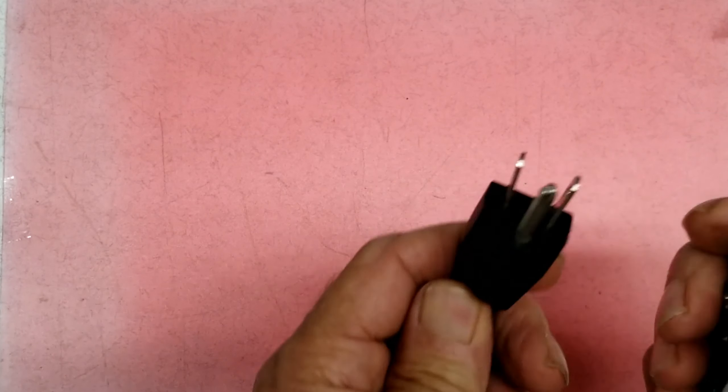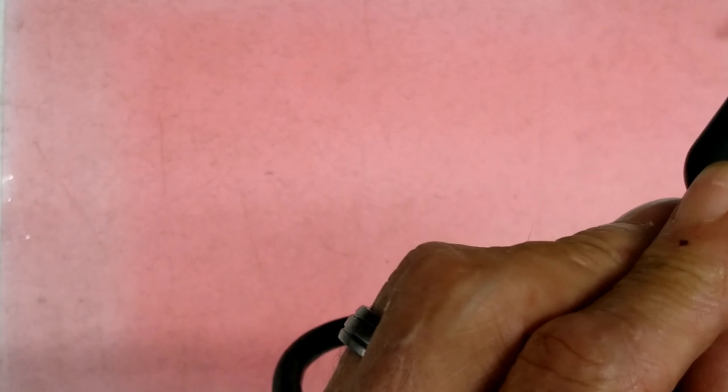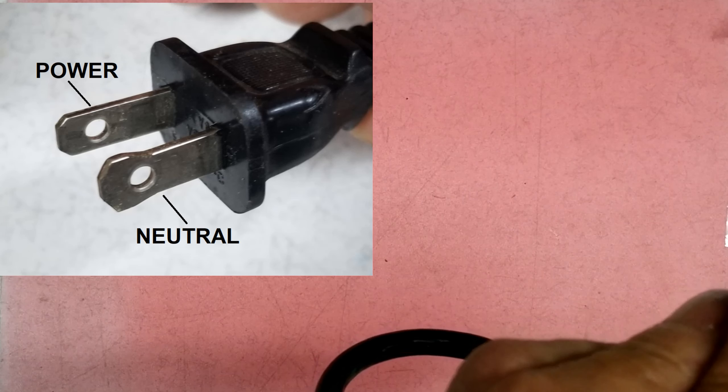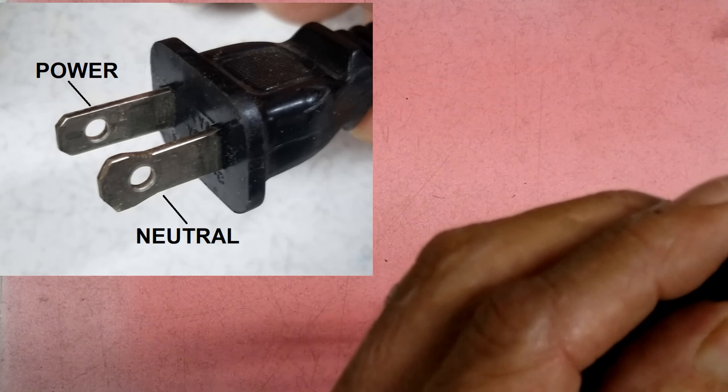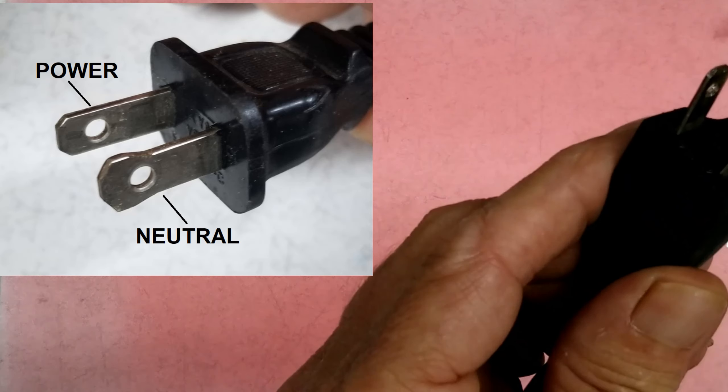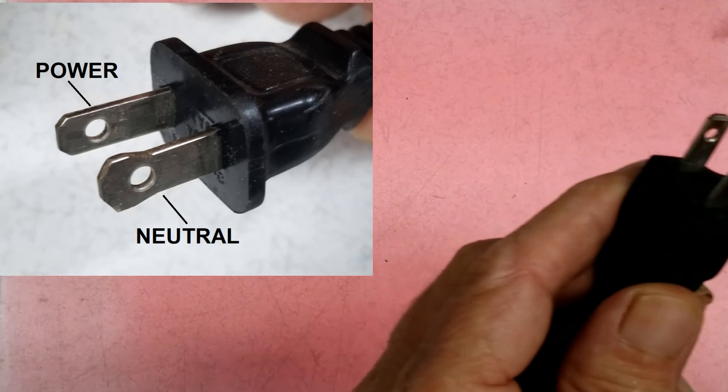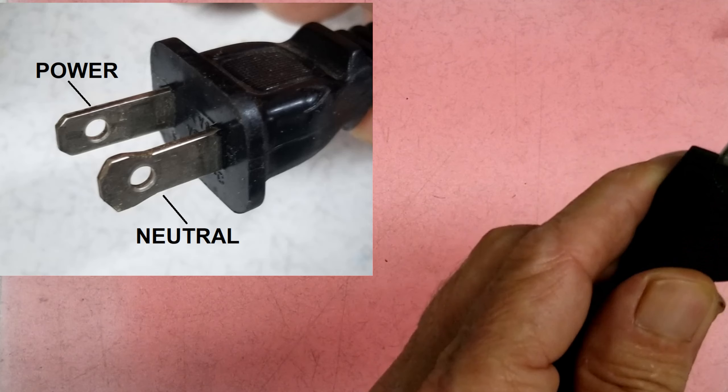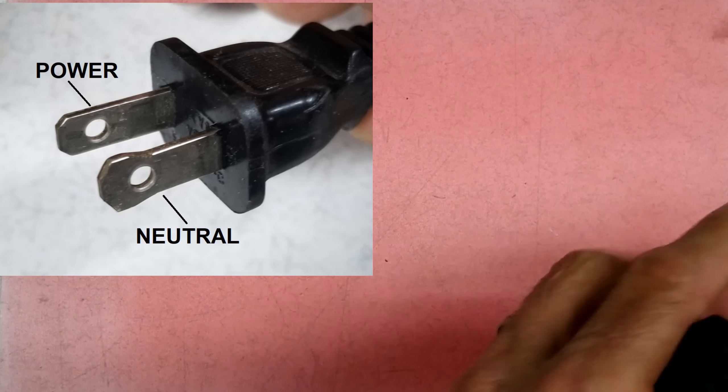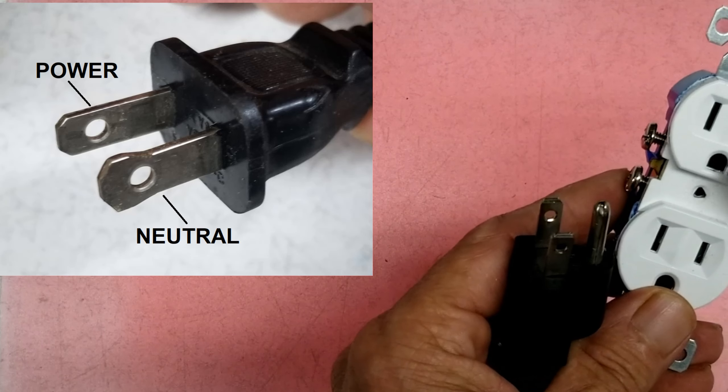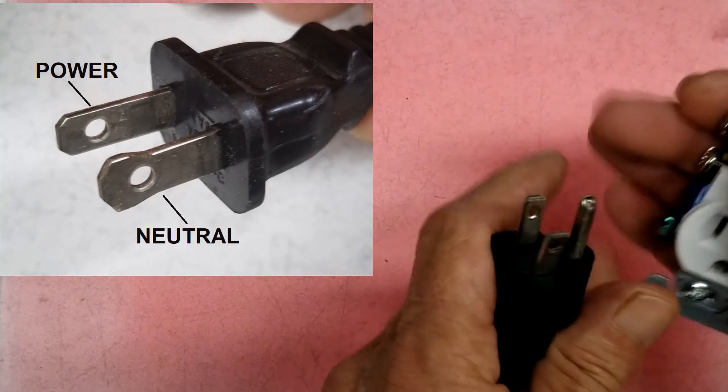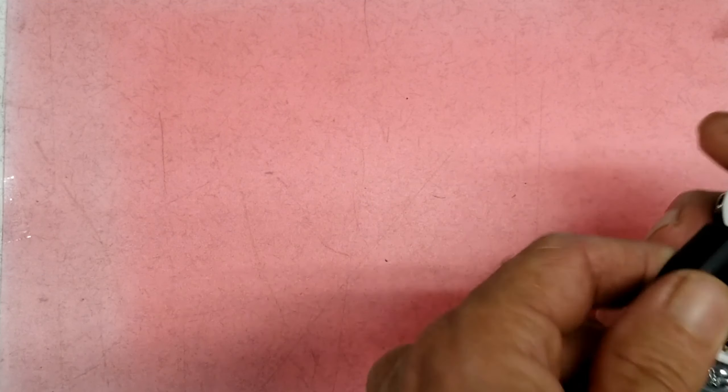Now, these are designed, you see how this one is taller than this one? You'll notice some of your plugs that one side will be taller than the other. And that's because of this right here, making sure you don't hook it up backwards, especially if they don't have a ground plug. But this one has a ground plug, so it can't be hooked up backwards. There's no way.